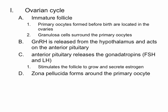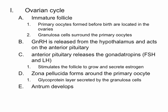Something called the zona pellucida now forms around the primary oocyte. The zona pellucida is a glycoprotein layer secreted by the granulosa cells, so it's going to actually be surrounding the oocyte itself. We also have the development of something called an antrum. The antrum is a fluid-filled space inside of the follicle.